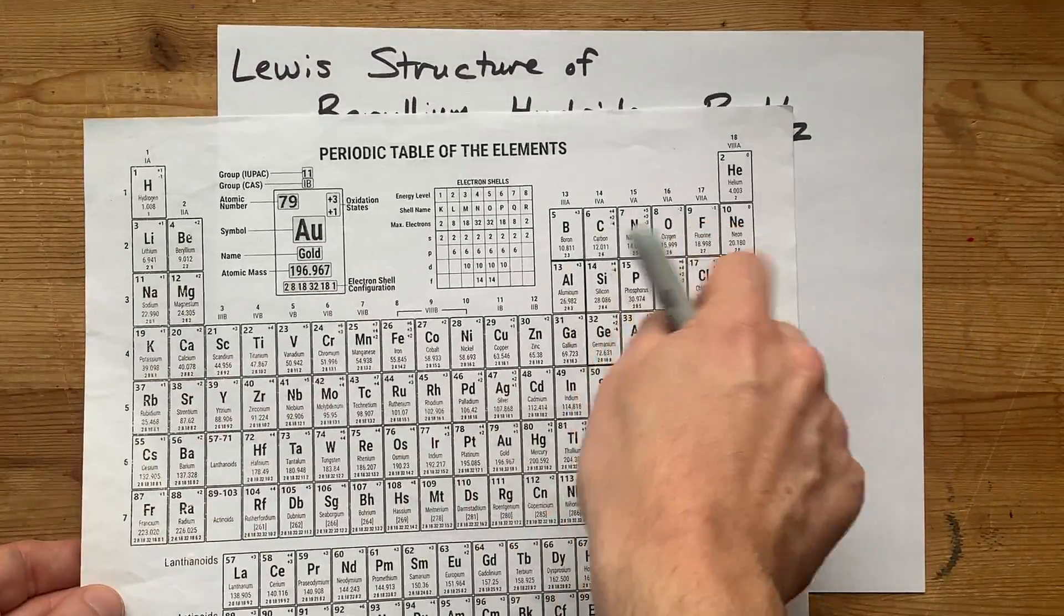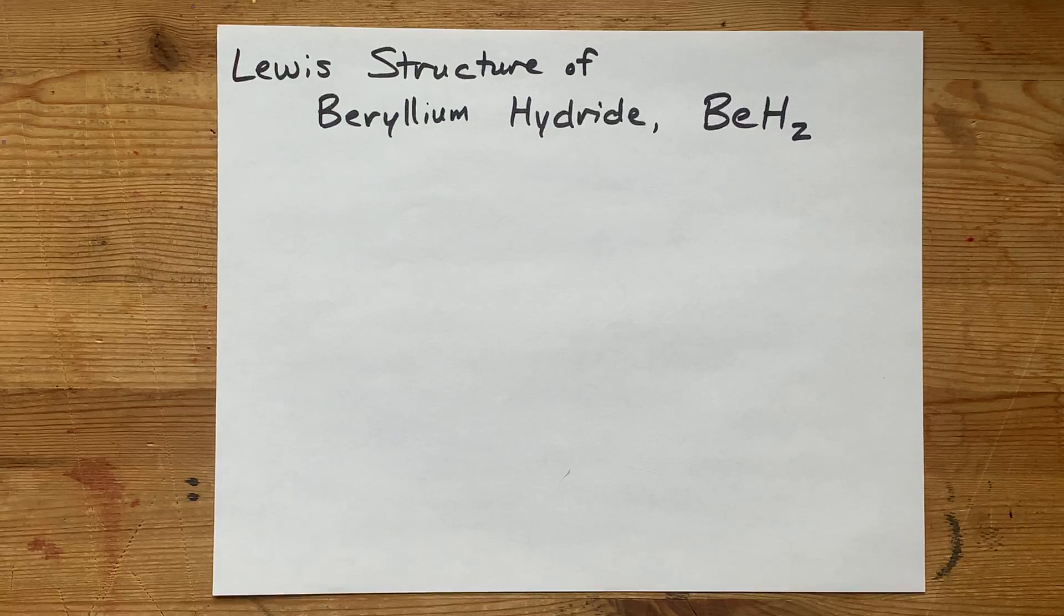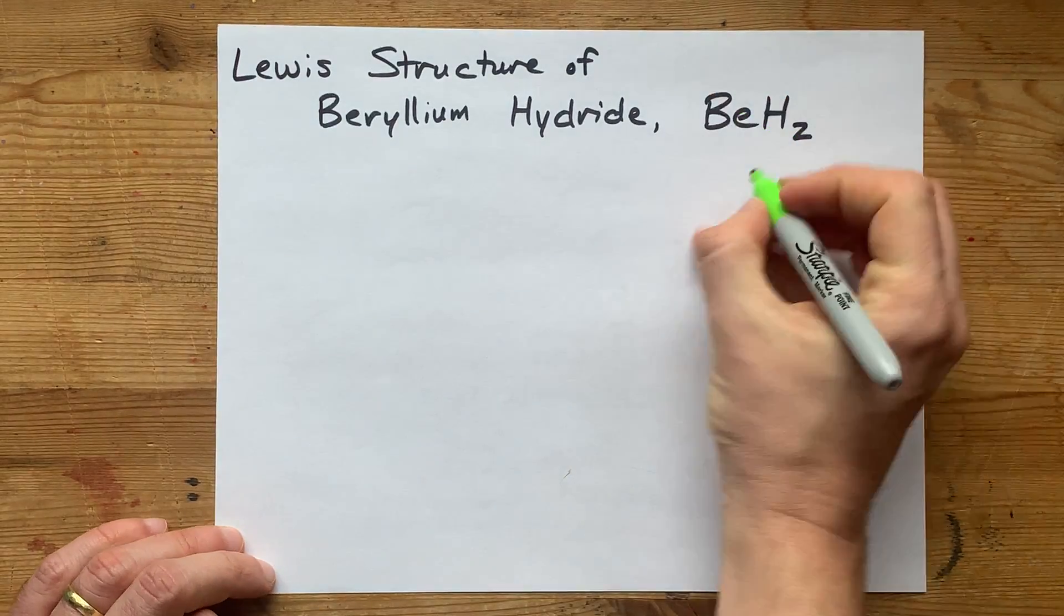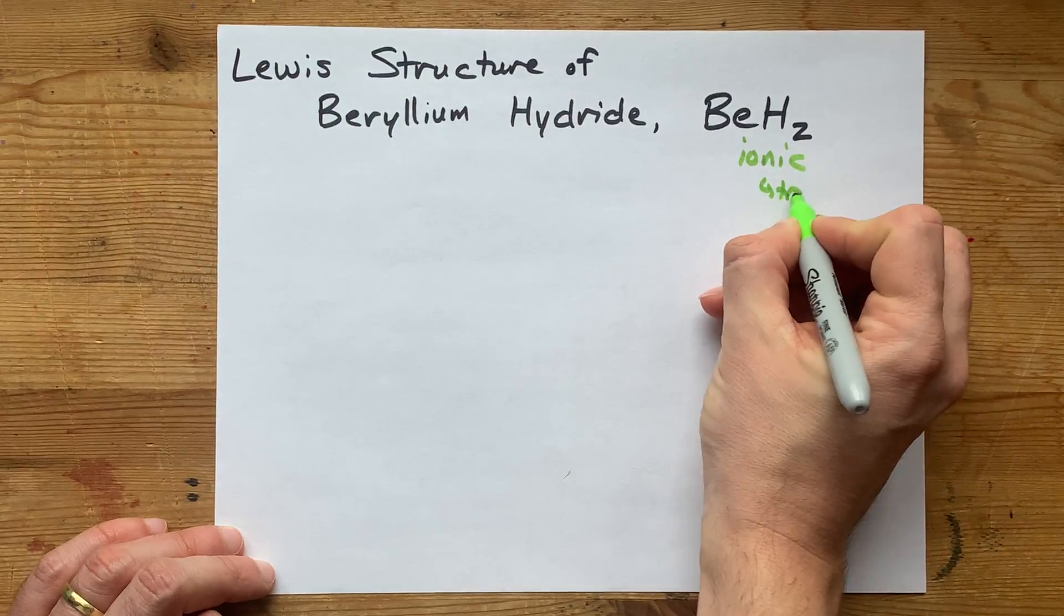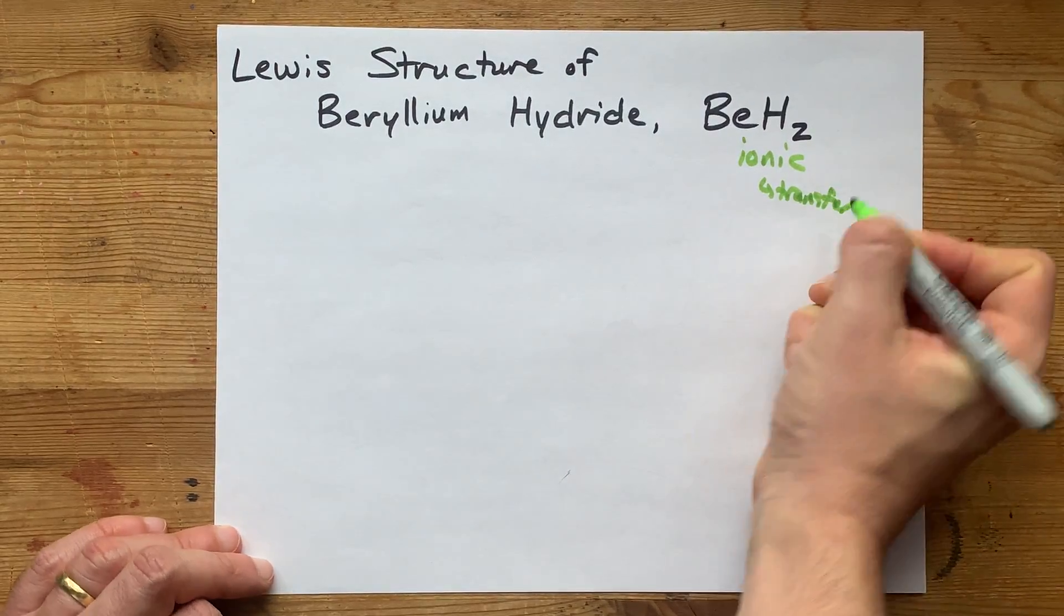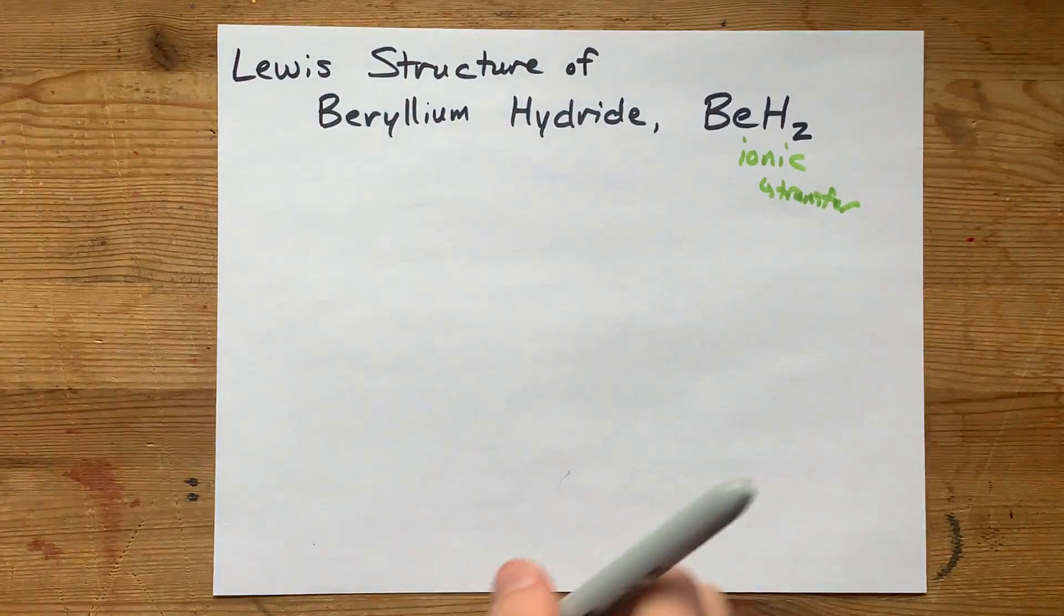I'm pointing over here because that's where all the other non-metals are. When you combine a metal and a non-metal, you end up with an ionic compound. It's going to be a transfer of electrons from the metal to the non-metal.